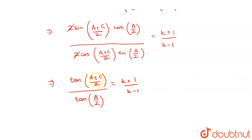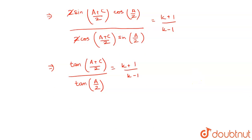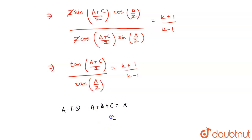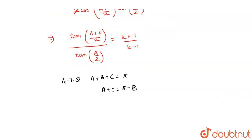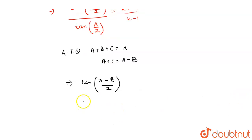Here we have (a+c) in the angle. Given in the question that a plus b plus c equals pi, so a plus c equals pi minus b. Using that substitution, it becomes tan((π - b)/2) upon tan(a/2), which is equal to (k+1)/(k-1).